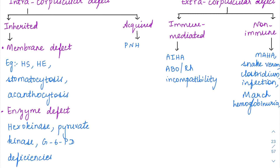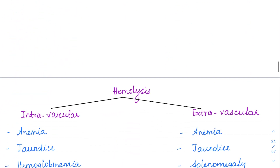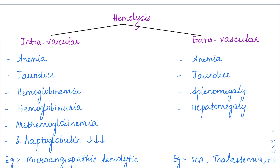Other examples could be snake venom and malarial infections as well. March hemoglobinuria was given this name because it is common in soldiers doing a march past. Because of continuous physical trauma to the legs, the RBCs are going to be damaged, causing hemolysis — that is why it is a physical mechanical trauma to the RBC, an example of non-immune type of extracorpuscular defect.